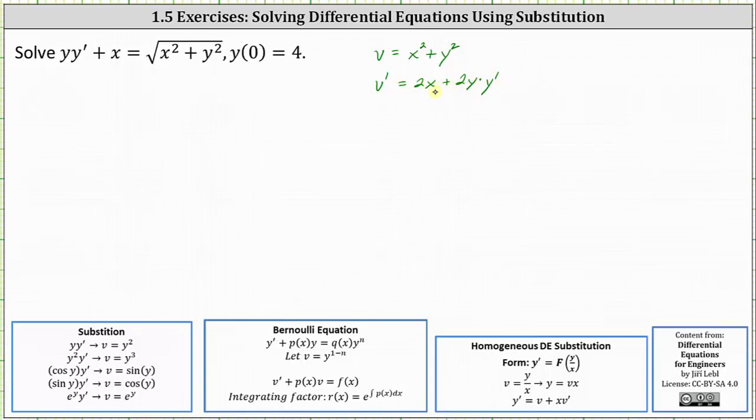And this is actually good news. Looking at the left side of the differential equation, we have yy prime plus x. If we multiply by two, it'll be equal to v prime, which means for the first step, we'll multiply both sides by two.